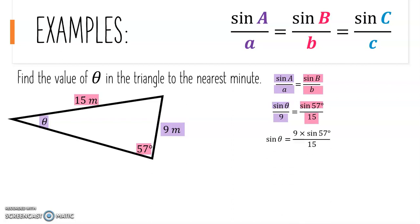We multiply both sides by 9 to remove the denominator on the left-hand side, and we get sine theta equals 9 times sine 57 degrees over 15.